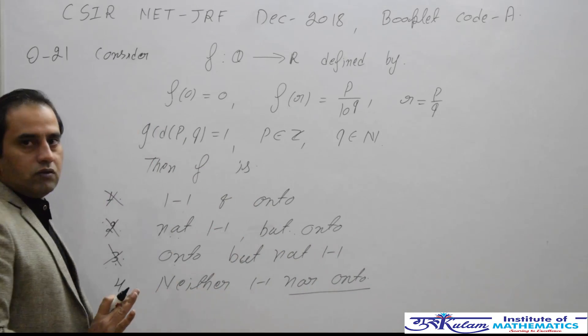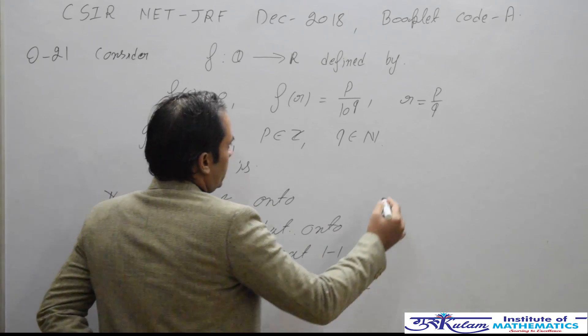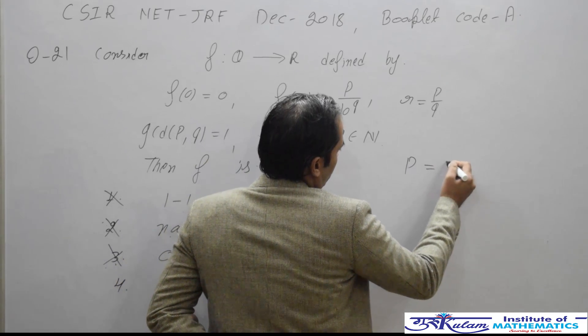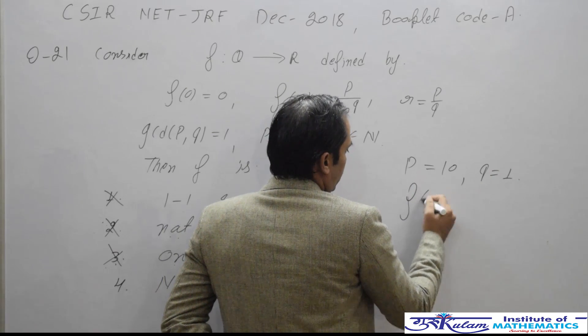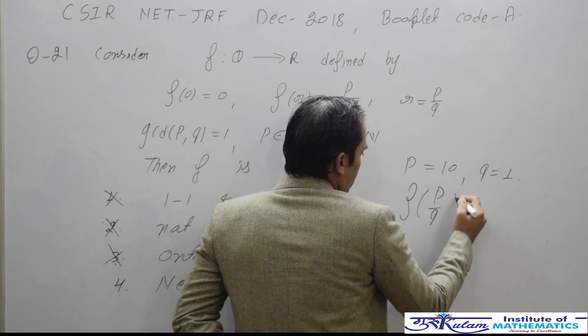Let's take p equal to 10 and q equal to 1. This implies f(t/q) is equal to 3.